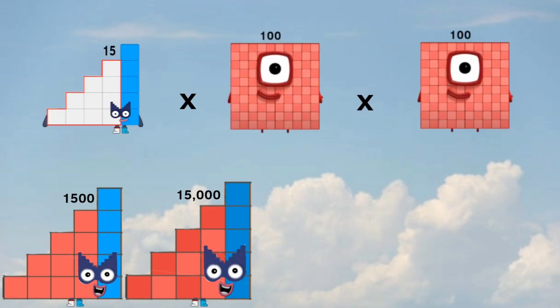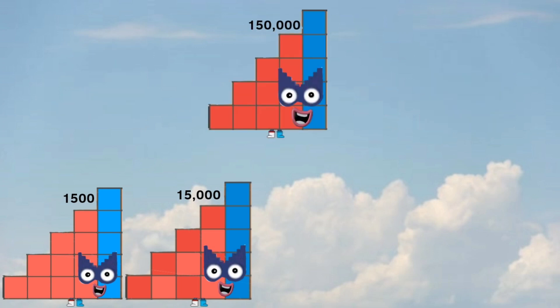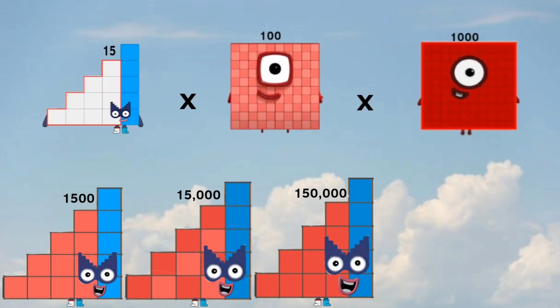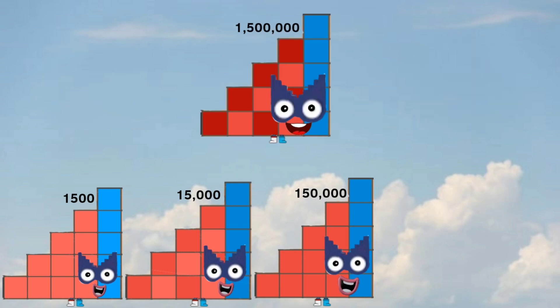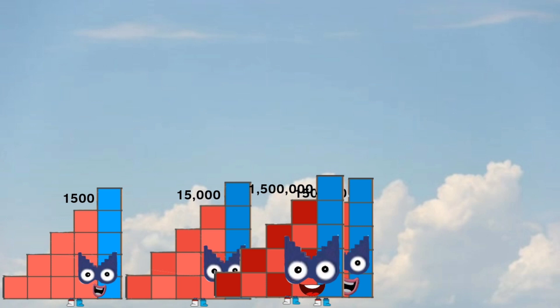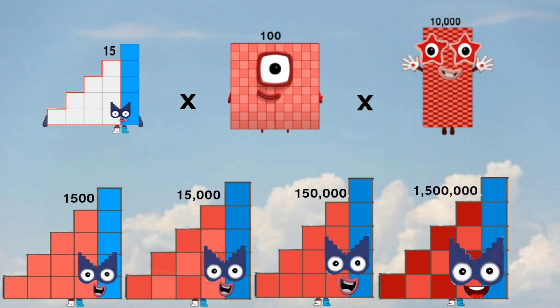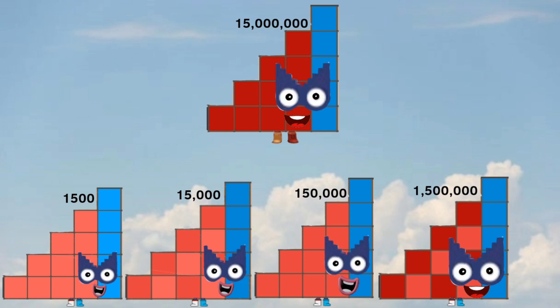15 times 100 times 100. 15 times 100 times 1,000 equals 1,500,000. 15 times 100 times 10,000 equals 15,000,000.